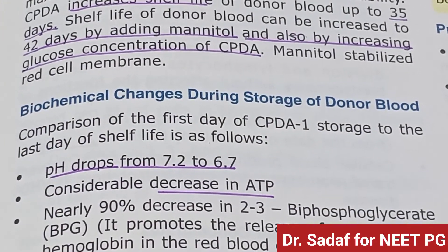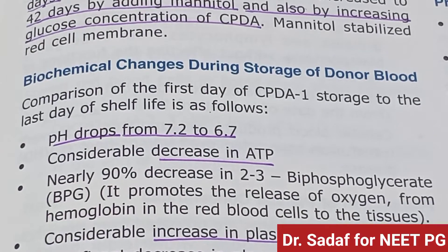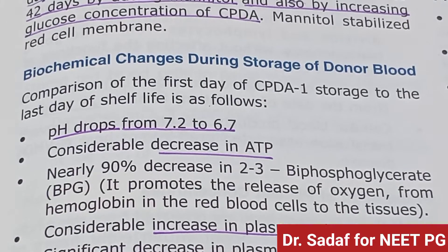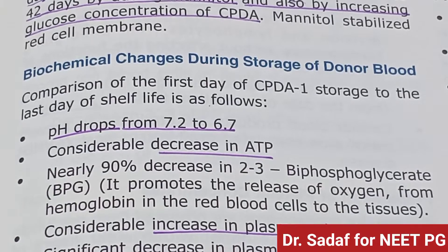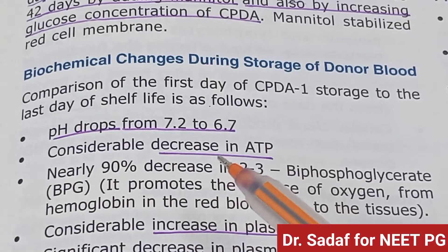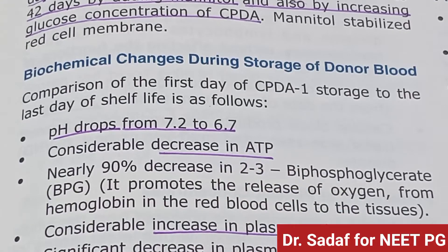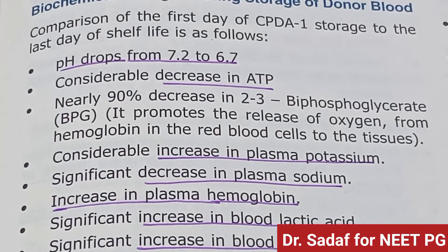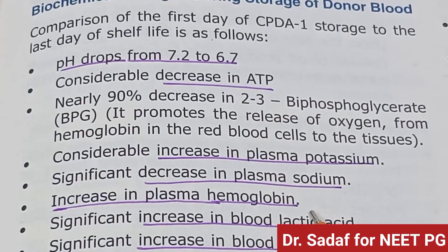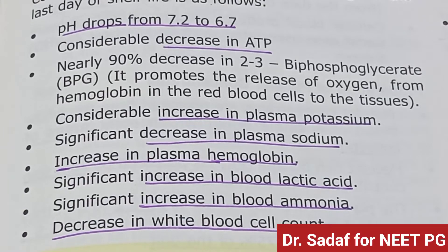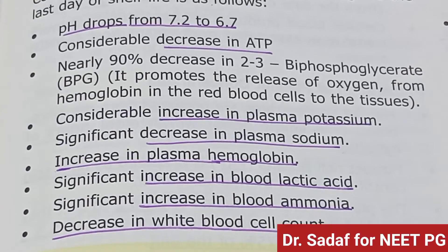Biochemical changes during blood storage: comparing the first day to the last day of CPDA storage, pH drops from 7.2 to 6.7, ATP decreases by nearly 90%, 2,3-bisphosphoglycerate (2,3-BPG) decreases improving oxygen release from hemoglobin to tissues. Plasma potassium, ATP, and sodium decrease; plasma hemoglobin, blood lactic acid, and blood ammonia increase; WBC count decreases.